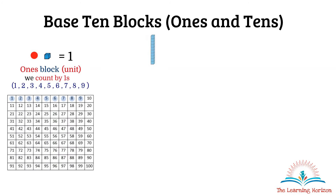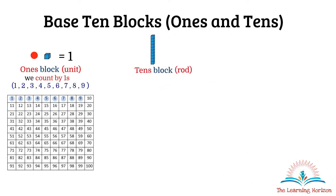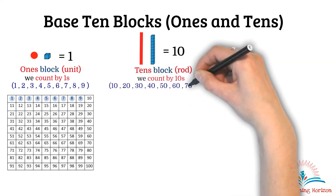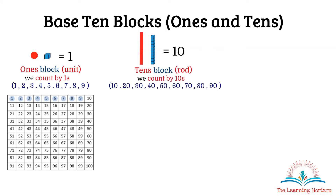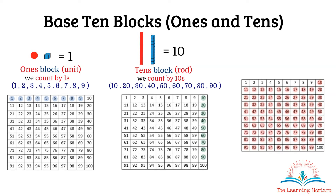This is a tens block, which is also called a rod. It can be represented as a stick. The value of each tens block is equal to 10, because one tens block is equal to 10 ones blocks. Therefore, when we have a group of tens blocks we count by tens. All the tens can be represented by tens blocks, and all two-digit numbers can be represented by ones and tens blocks.